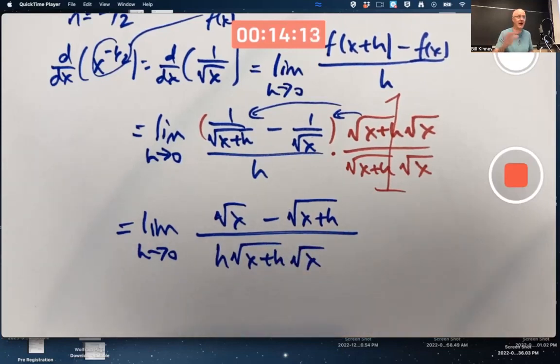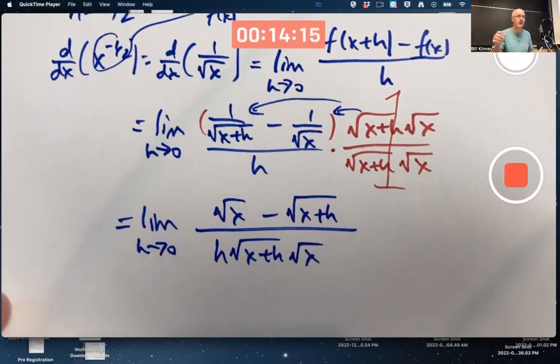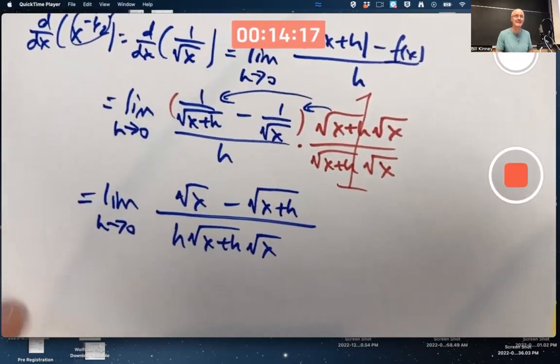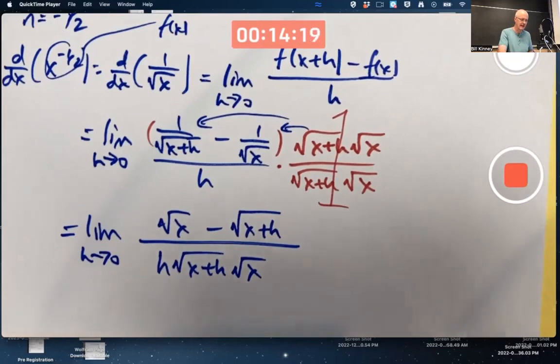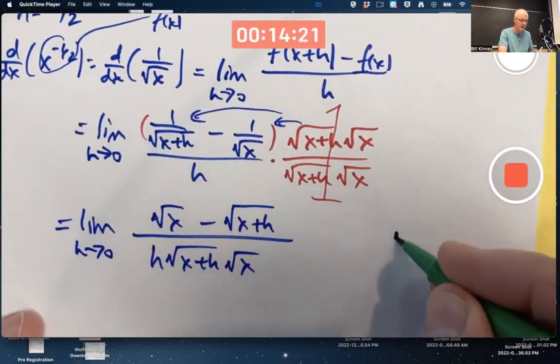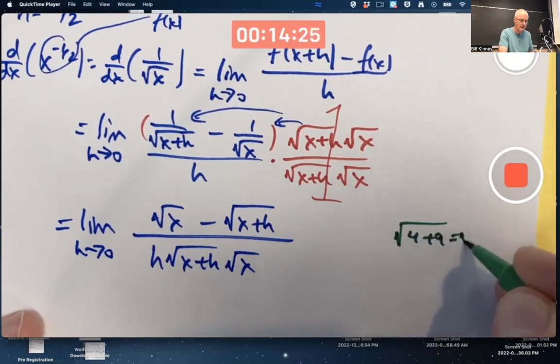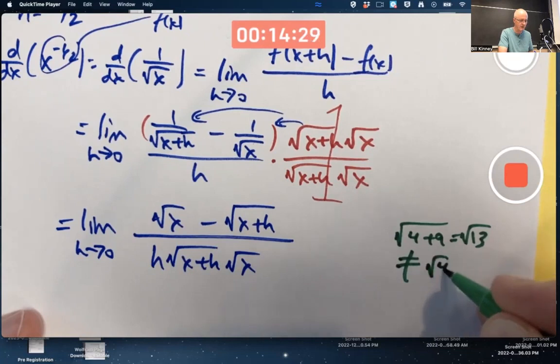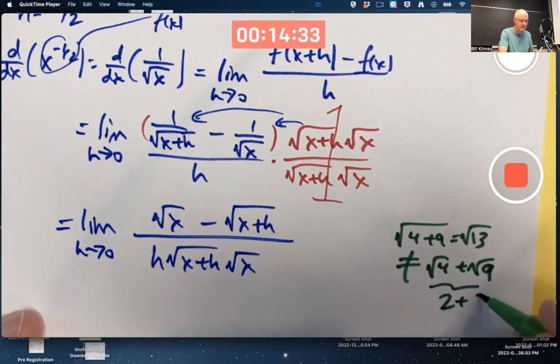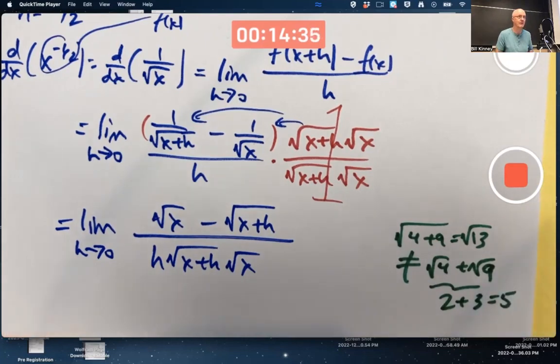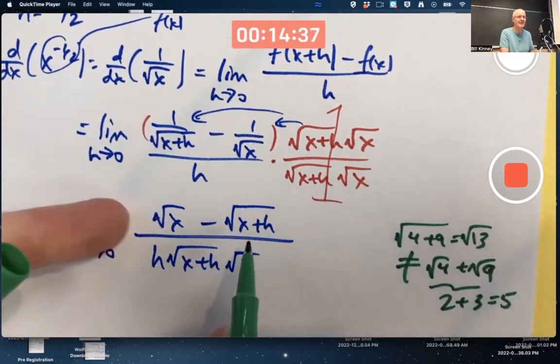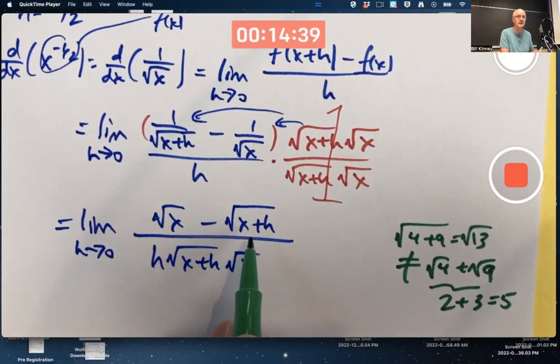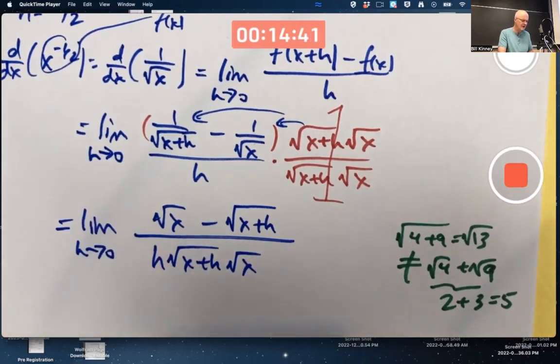That √(x+h) is not equal to √x + √h. Don't ever think that the square root of a sum is the sum of the square roots. It's not true. As an example, the √(4+9) is √13, and that does not equal √4 + √9, because that is 2 + 3 = 5, and 5 is not √13. So you cannot break that apart into two pieces.